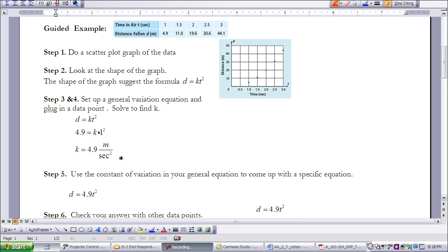So now I have a value for k. And just like we did in solving other variation equations, we're now going to take that k and insert it into our general equation and make a more specific equation. So that would be d equals 4.9t squared.